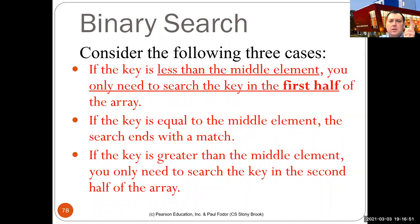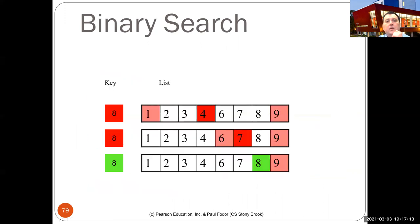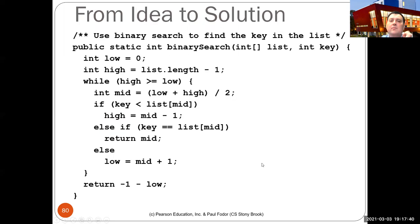Binary search algorithm: define 'low = 0' and 'high = list.length - 1'. While high >= low, compute 'middle = (high + low) / 2'. If key < list[middle], set high = middle - 1. If key == list[middle], return middle. Otherwise set low = middle + 1. Repeat until the key is found and the index is returned, or high falls below low indicating the key is not in the array.